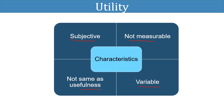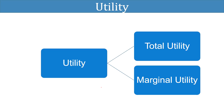Utility is not the same as usefulness. Commodities like wine and poison also have utility but they are not useful. So utility and usefulness are two different things.